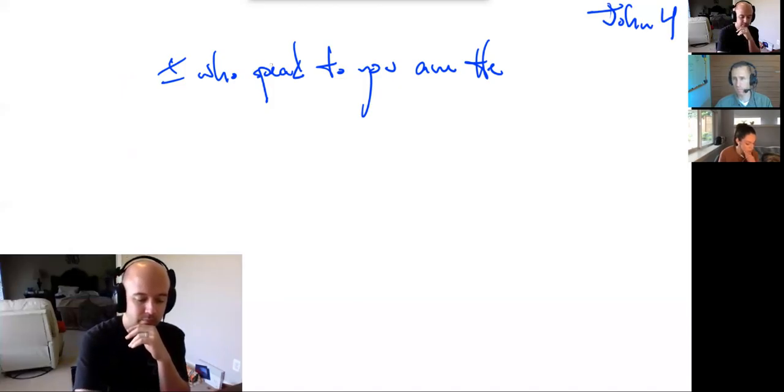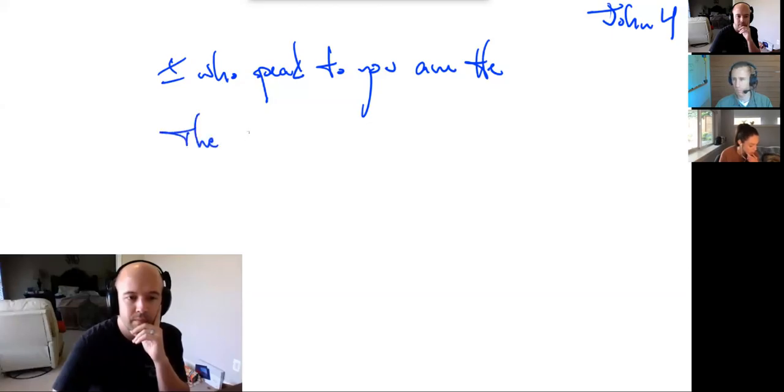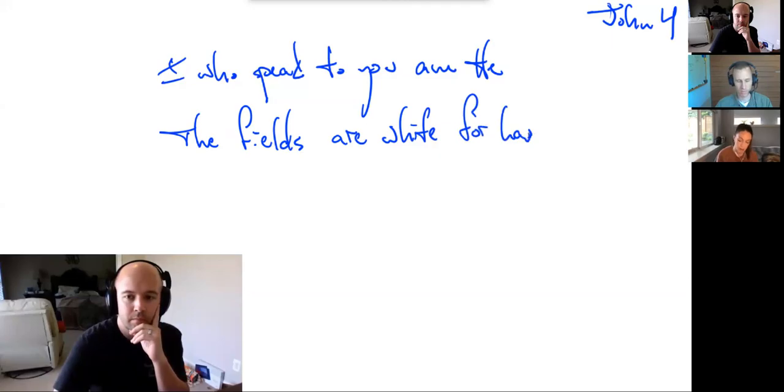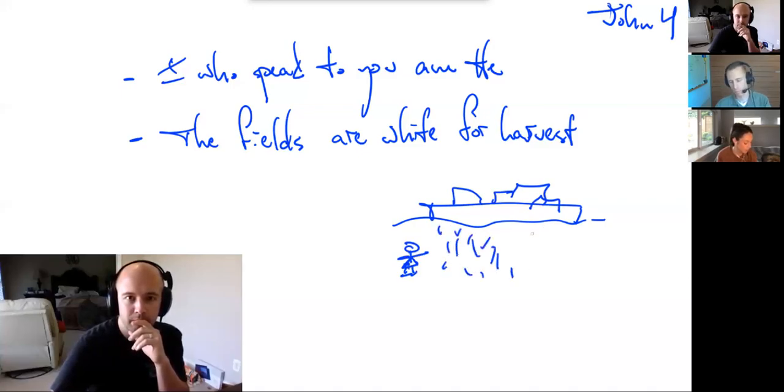One was about the nature of the coming Messiah, the fact that it was him. And that salvation was coming, had arrived. Yeah, I who speak to you am he. That's how he put it to the Samaritan woman. She had talked about the Messiah, trying to get him off the topic of her sin, and he came right out and just told her, I am the Messiah. Very good. That's one of the big points of that section.